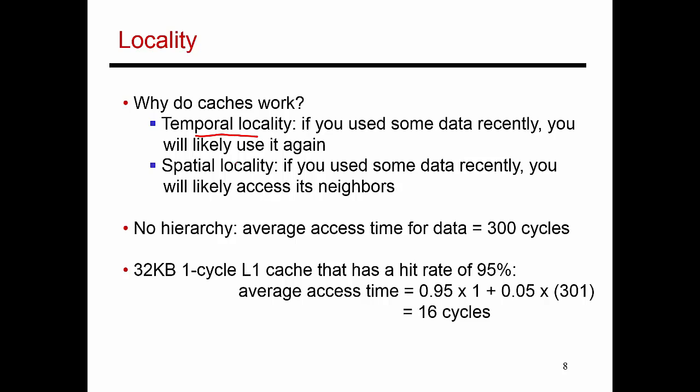You can have temporal locality as well as spatial locality. Temporal locality refers to the fact that if I've just accessed element A, there's a good chance that I'm going to revisit and access the same element sometime later. In the near future, I'm going to touch A once again. Spatial locality refers to the fact that if I've touched element A, in the very near future, I'm going to touch its neighboring elements as well. So I might touch element A plus 1 or A plus 2, A plus 3, and so on.